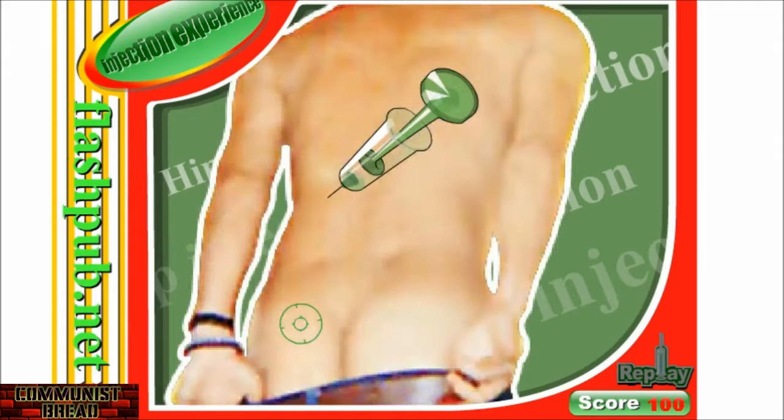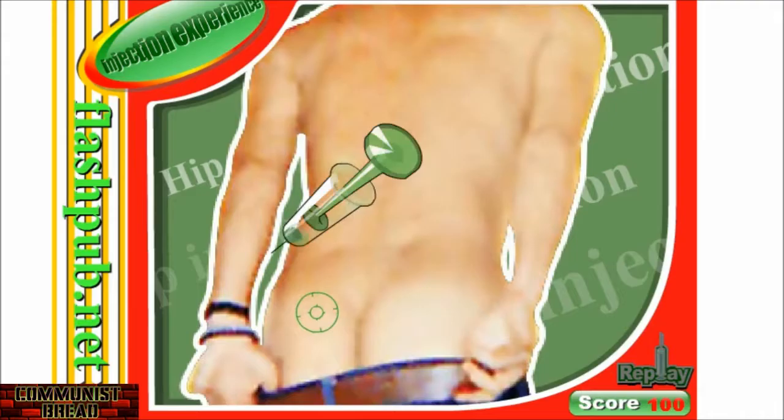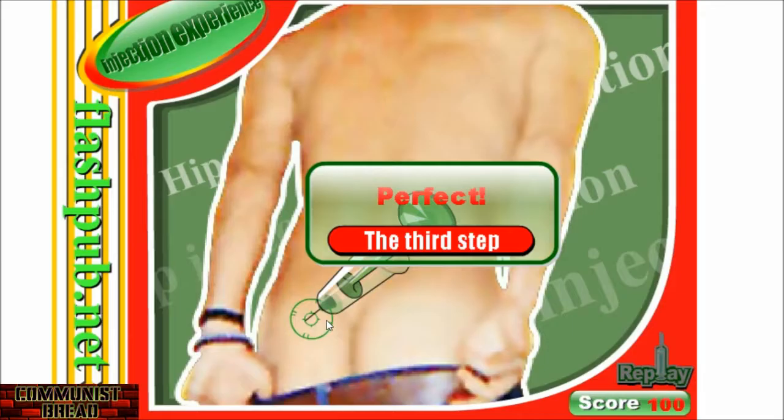All right, so the point of this game is I have to stick this needle in this man's ass right here. This is level one. See, he's really fidgety. So we gotta at least get in the zone. And this is actually a little difficult. Let's see. Oh, I guess I was perfect. The second step. All right, here we go. And this is how you get better.